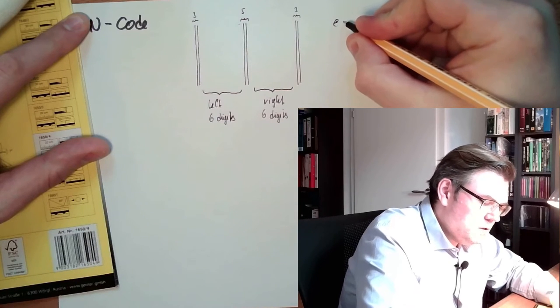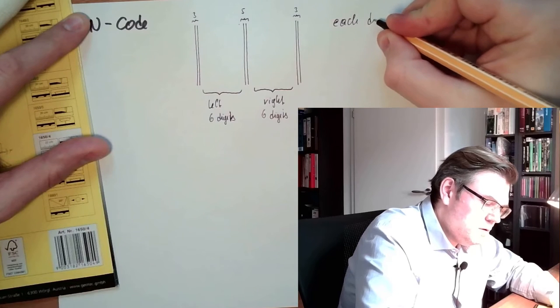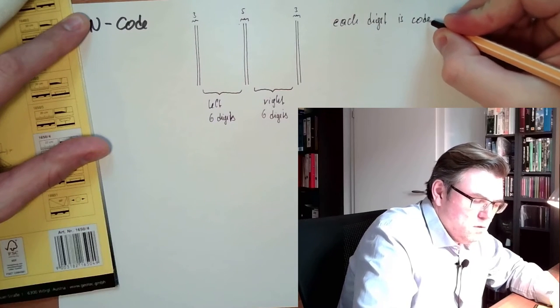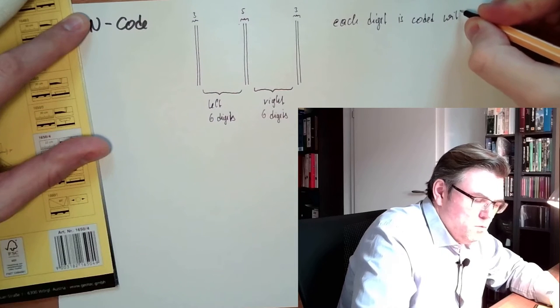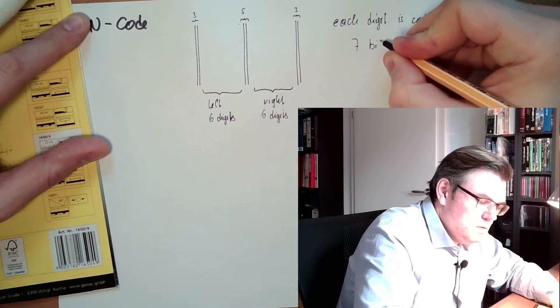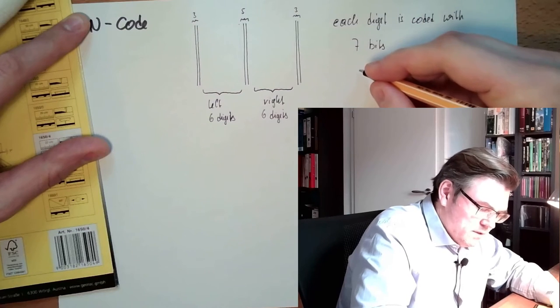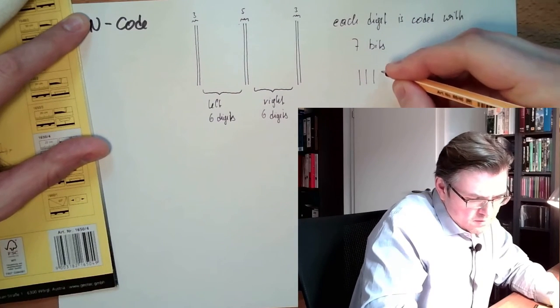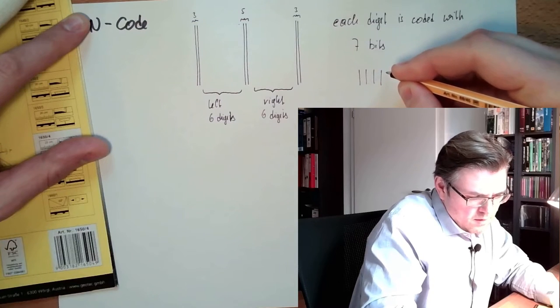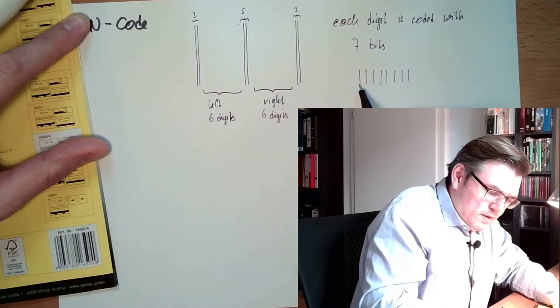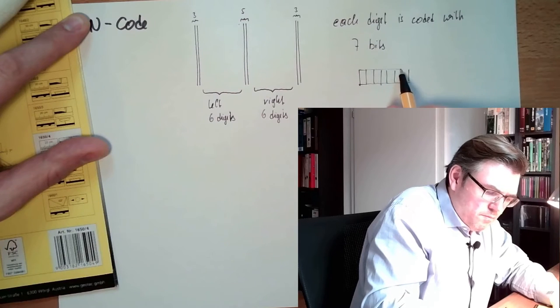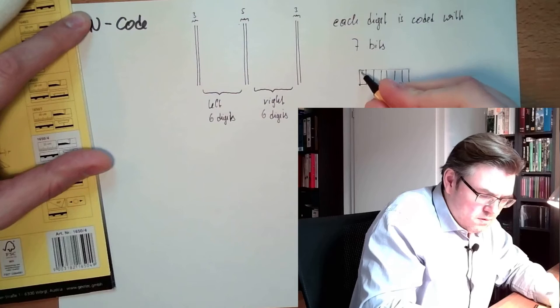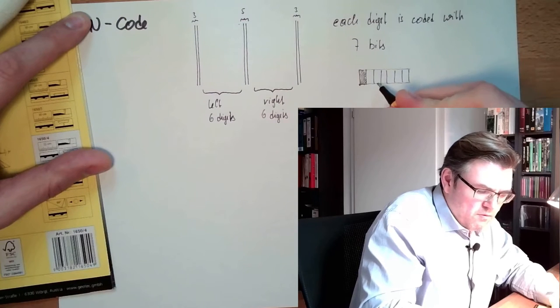Each digit is coded with seven bits. So there is a pattern of seven, two, three, four, five, six, seven. Seven parts. Some of them are black, some of them are white.